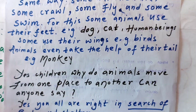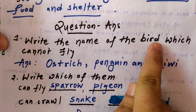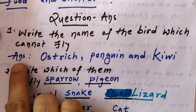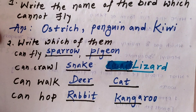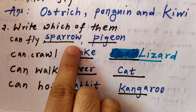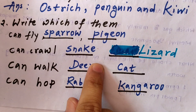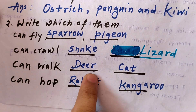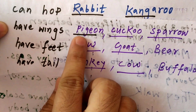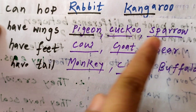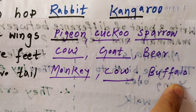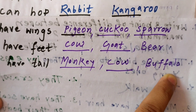Now let's discuss a few question answers. First question: write the names of birds which cannot fly. Answer: ostrich, penguin, and kiwi. Second question: write which animals can fly — sparrow, pigeons; can crawl — snake, lizard; can walk — deer, cat; can hop — rabbit, kangaroo; have wings — pigeons, cuckoo, sparrow; have fins — fish, cow, goat, bear; have tails — monkey, cow, buffalo.